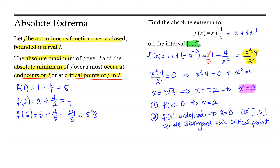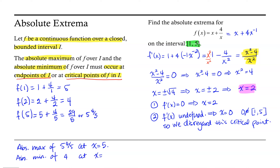From this information, we identify our absolute maximum and our absolute minimum. The absolute maximum is the largest output value, so our absolute maximum is 5 and 4 fifths, and that happens when x equals 5. Our absolute minimum will be the smallest of the output values, so we have an absolute minimum of 4, and that happens at x equals 2. I hope you find this helpful.